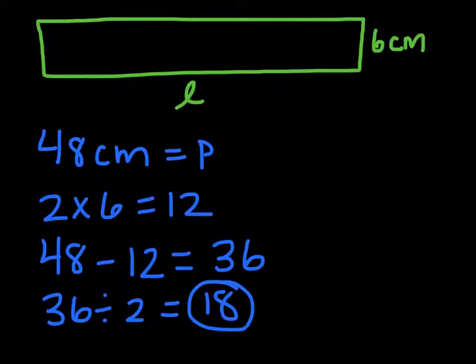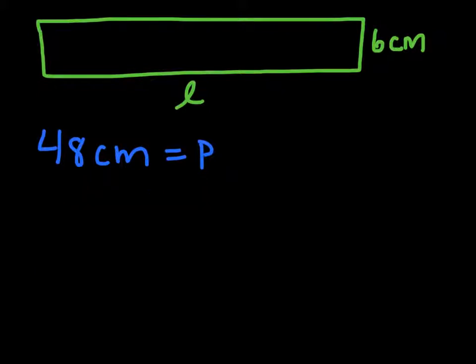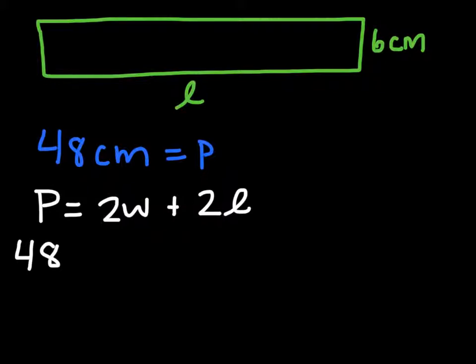Now let's talk it through using algebra. To solve for length using algebra, we'll begin by writing the formula for perimeter. Perimeter equals 2 times width plus 2 times length. Now we'll substitute what we know. We know our full perimeter is 48 centimeters. We know that our width is 6 centimeters, and we don't yet know our length.